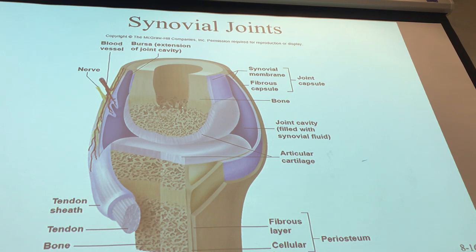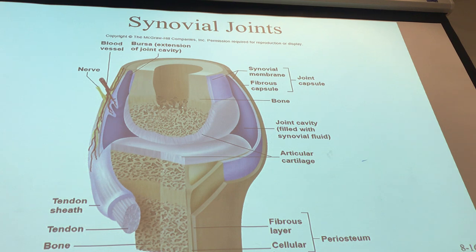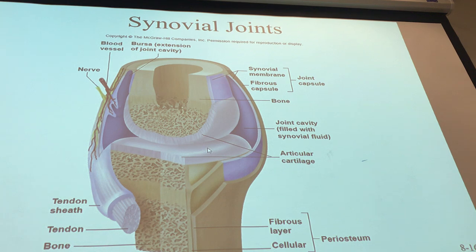To visualize articular cartilage, think about a chicken drumstick. The ends of drumsticks are really, really shiny — that's the articular cartilage. If you have a quarter piece with a thigh and a drumstick, the thigh is the femur and the drumstick is the tibia, so when you open it up that's the knee joint. The ends are nice and smooth because of the cartilage, which allows for nice, smooth, frictionless movement.